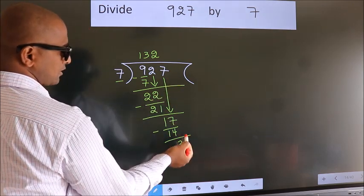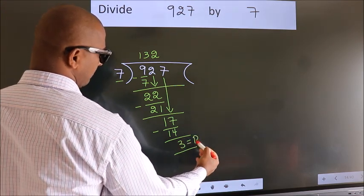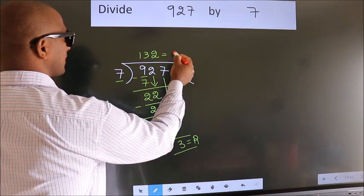No more numbers to bring down. So we stop here. This is our remainder. This is our quotient.